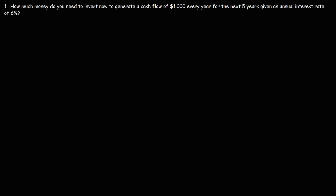In this video, we're going to talk about how to calculate the present value of an annuity, or a stream of income payments. So let's use this example problem to illustrate this: how much money do you need to invest now to generate a cash flow of $1,000 every year for the next five years, given an annual interest rate of 6%?